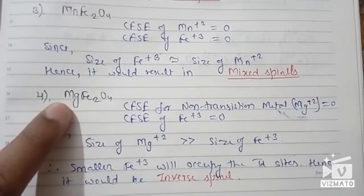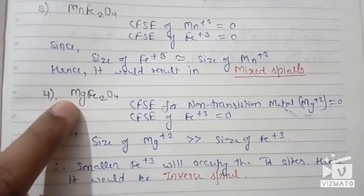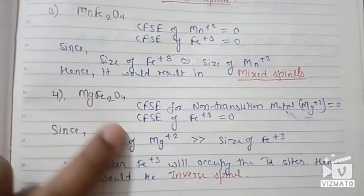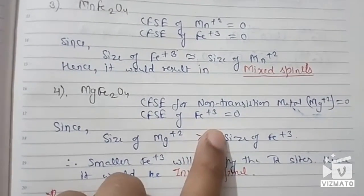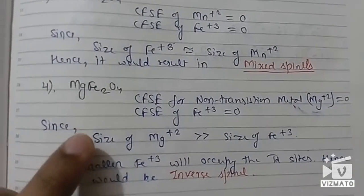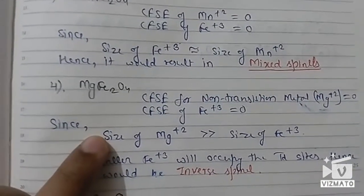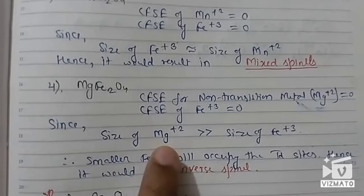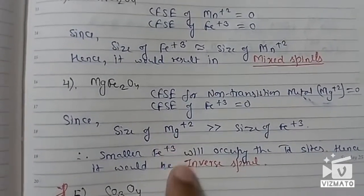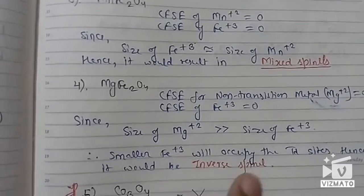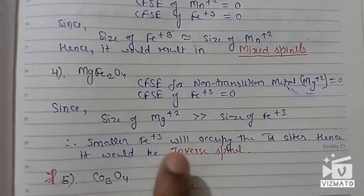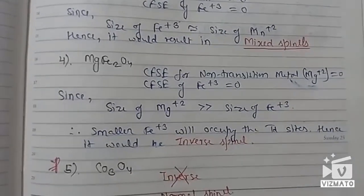For question 4 with MgFe₂O₄: magnesium is not a transition metal, so its CFSE is 0. Fe³⁺ is a d⁵ configuration, so its CFSE is also 0. Since the CFSE for both metals is 0, we use the size criterion. The size of Mg²⁺ is bigger, so it will occupy the bigger octahedral voids, while the smaller Fe³⁺ occupies the smaller tetrahedral voids — resulting in an inverse spinel.